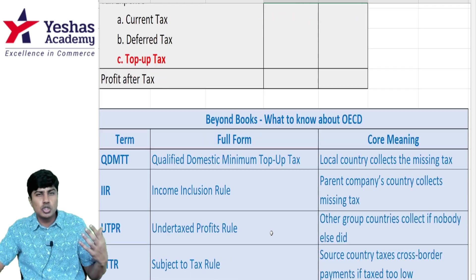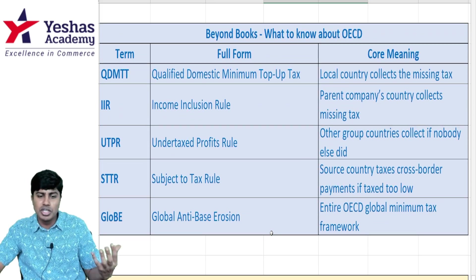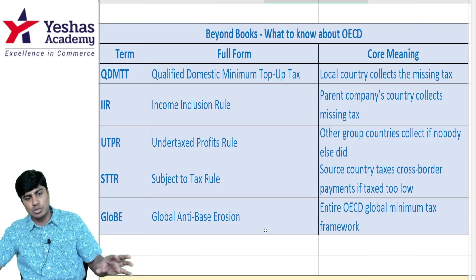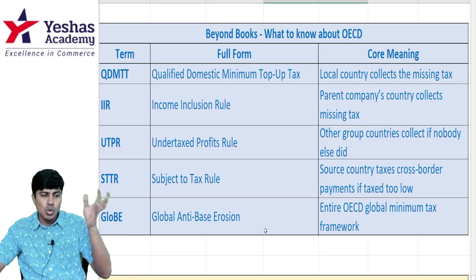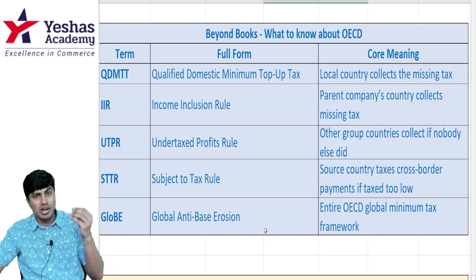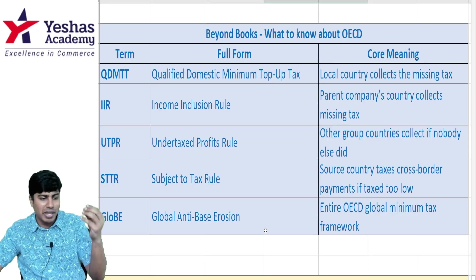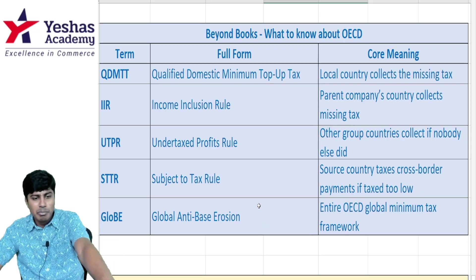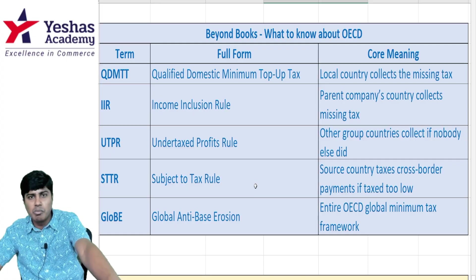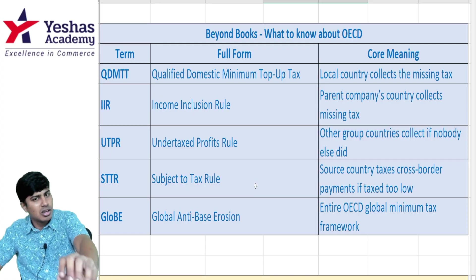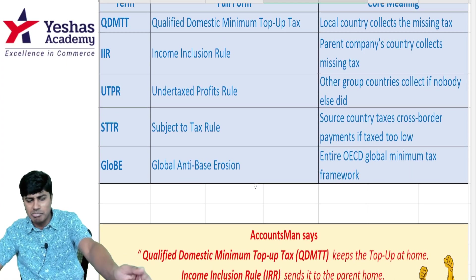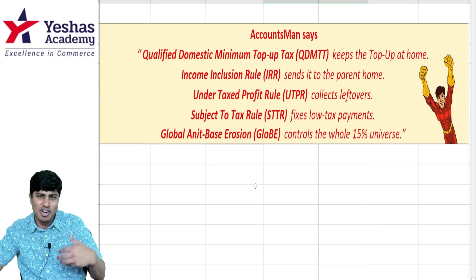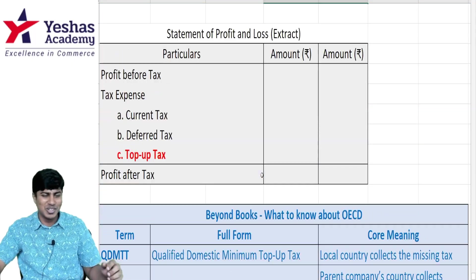If you are curious to know more about this OECD concept — not definitely required for January 2026 students — there is information on QDMTT, IIR, UTPR, STTR, and GloBE. I have given everything in the PDF, including my own interpretation of this concept, which you can read when you get the material.